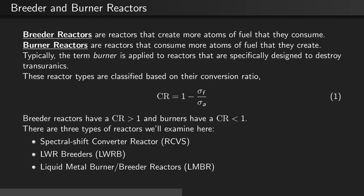There are three types of reactors we'll examine here: spectral shift converter reactors, LWR breeders, and liquid metal burner or breeder reactors.